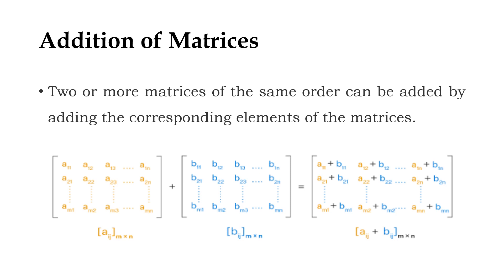For example, here we have the element A11. We have to add it with B11. The resultant element is A11 of the first matrix and B11 of the second matrix. Likewise, we have to consider the next element.